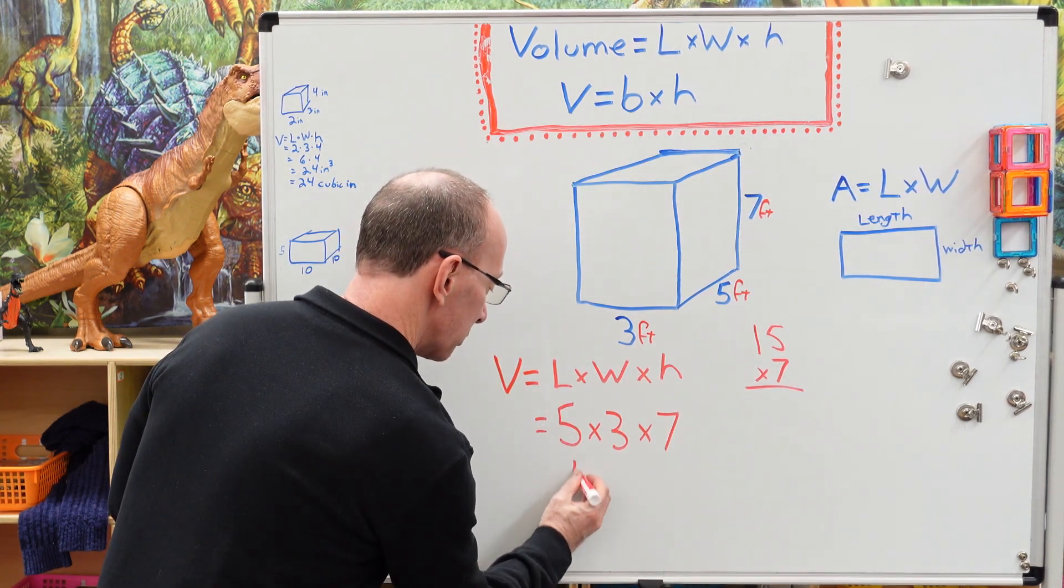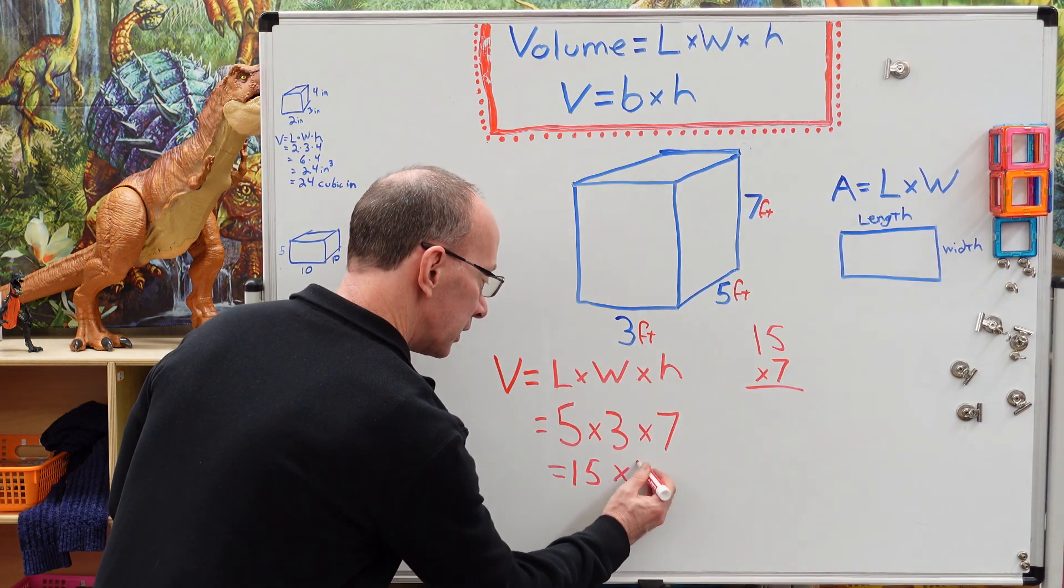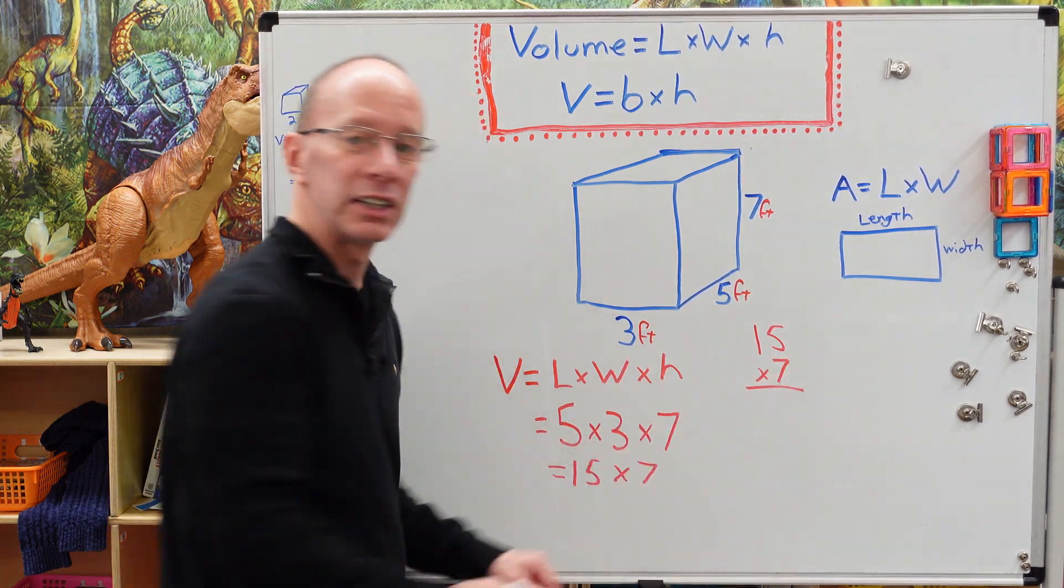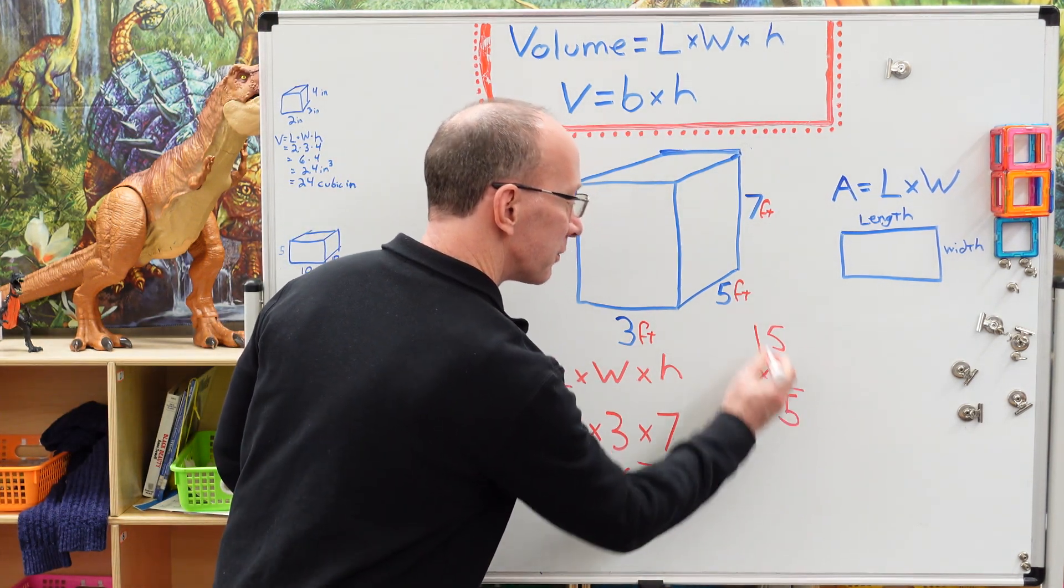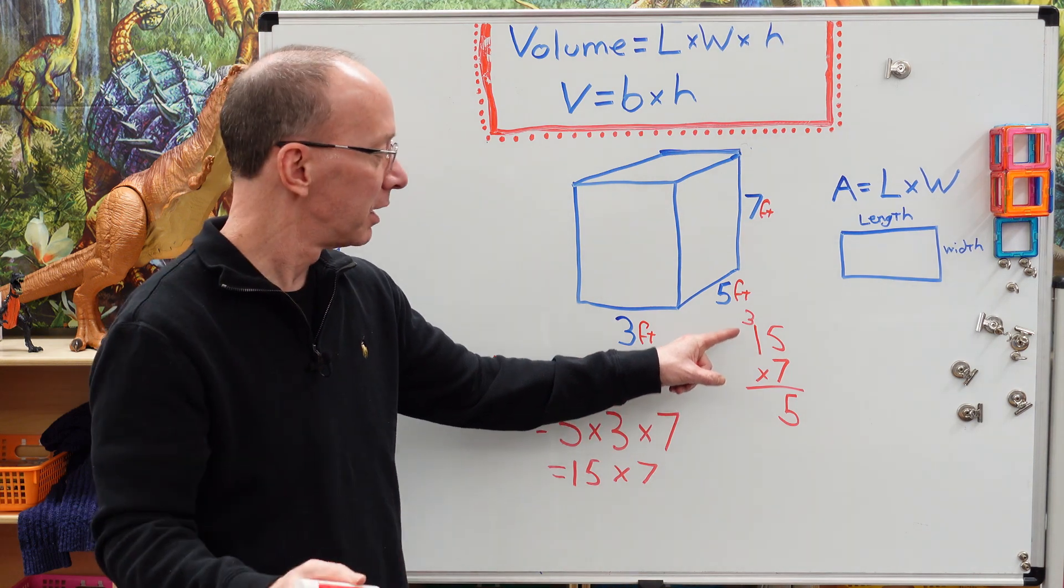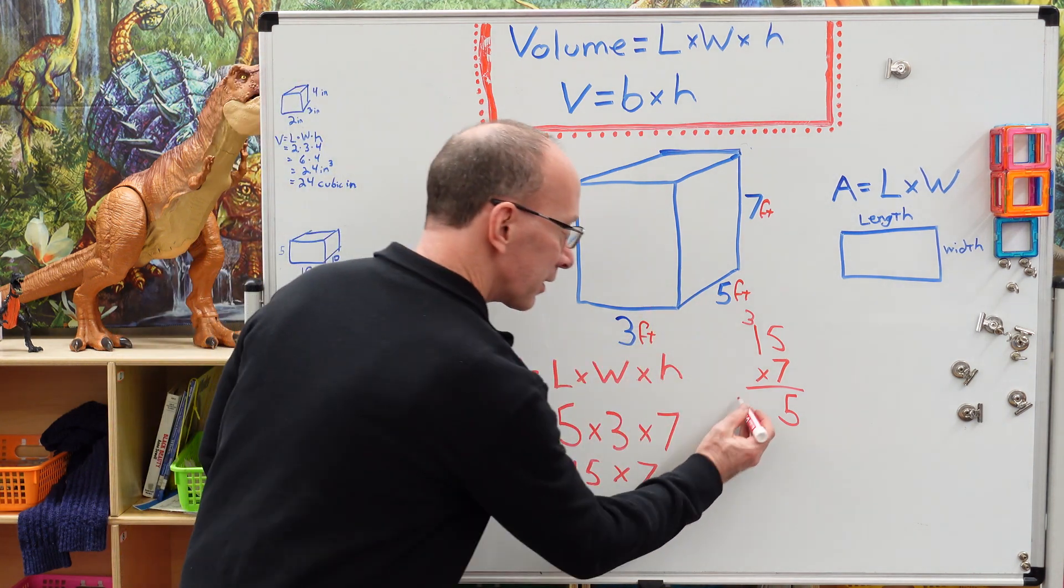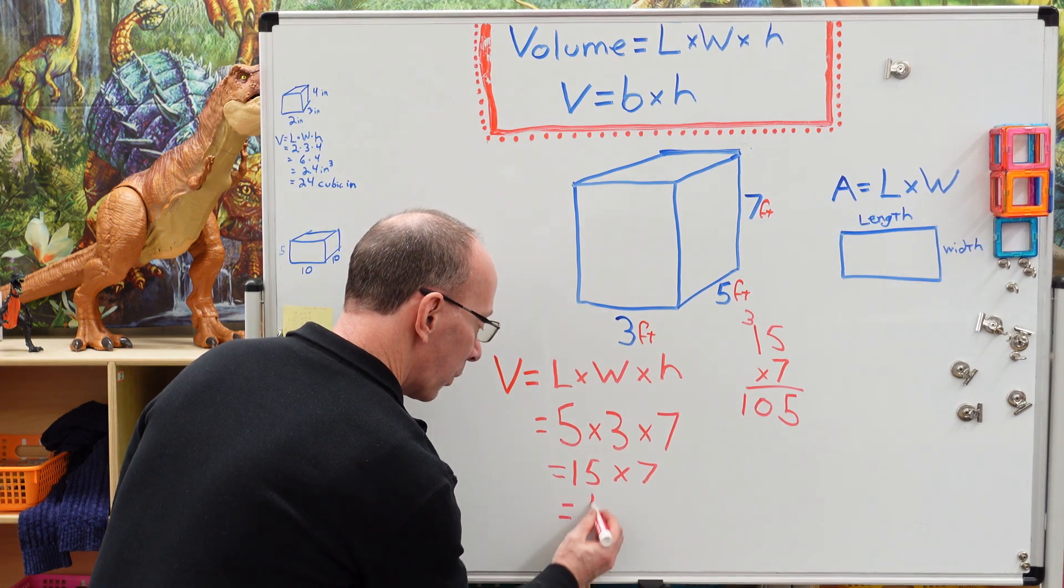So if you need to simplify that down here, you can do that also. So this would be 15 times seven. So seven times five, 35. You guys are math ninjas. And then seven times one is seven, eight, nine, ten.